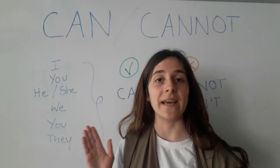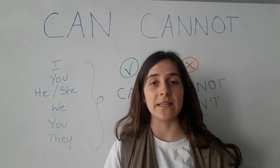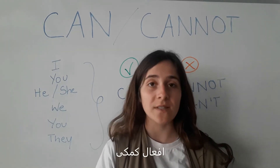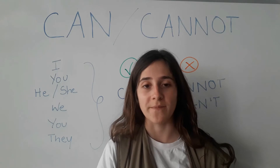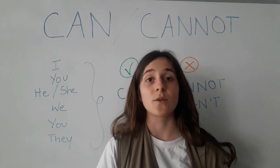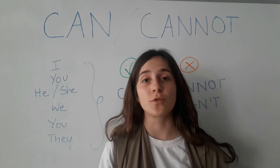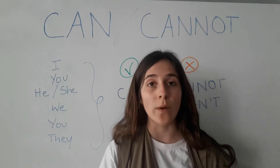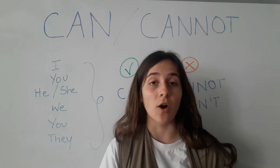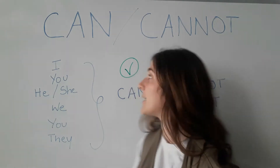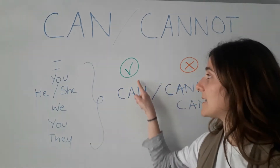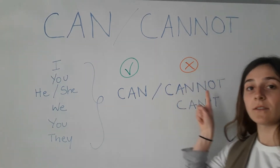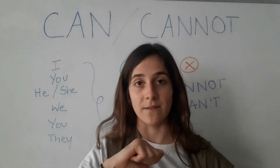The word can and cannot is what we call an auxiliary — un auxiliaire en français. It means that we don't conjugate can and cannot. It always remains can or cannot: can if it's positive, cannot if it's negative.